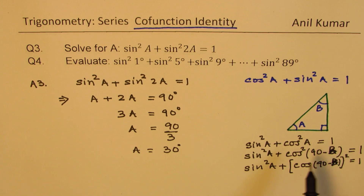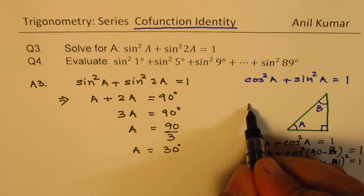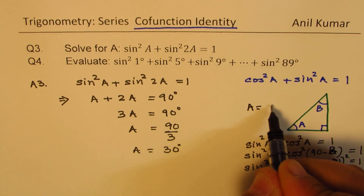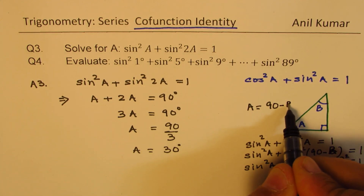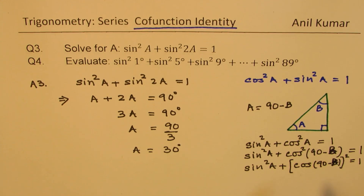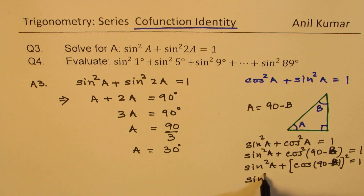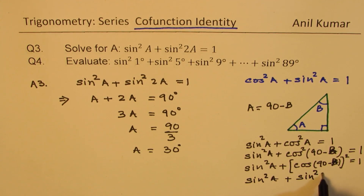As you can see, a can be written as 90 minus b. So replacing cos square a with cos(90 minus b) whole square, we get sine square a plus sine square b equals 1. This follows directly from the co-function identity.